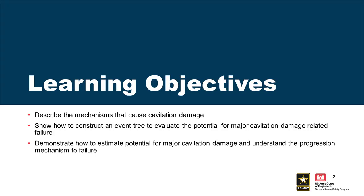So, learning objectives: talk a little about the really interesting mechanism of cavitation, what it is and how it forms, and then ultimately how to estimate it. And then some event trees that are going to look exactly like the event trees we've had for all these spillway erosion or spillway failure modes.